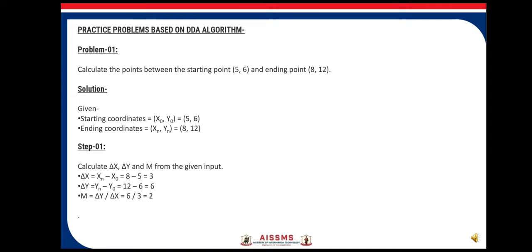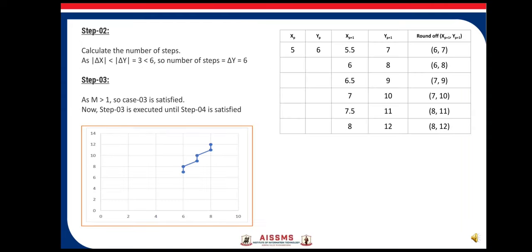Now, the slope value is 2. We have to find out which condition we'll get and up to which steps we have to calculate these points or find out the coordinates. Here, delta x is less than delta y - 3 is less than 6 - so the number of steps equals delta y, which equals 6. Now we have to find out which condition is satisfied. Since m is greater than 1, Case 3 is satisfied.